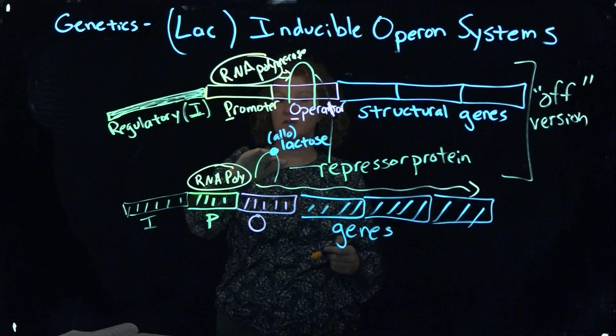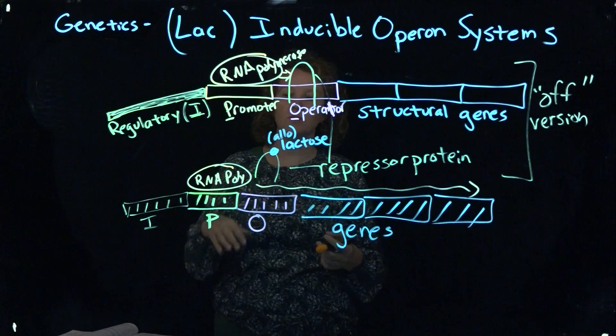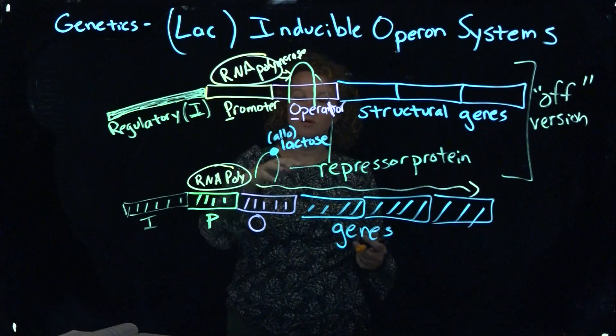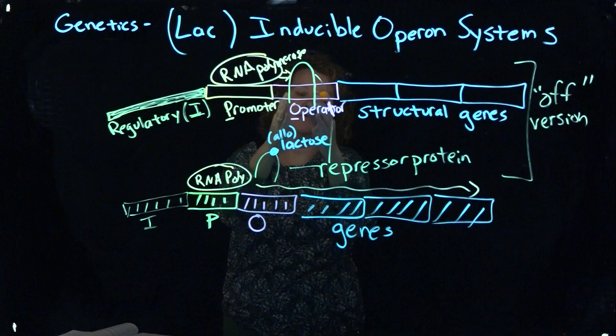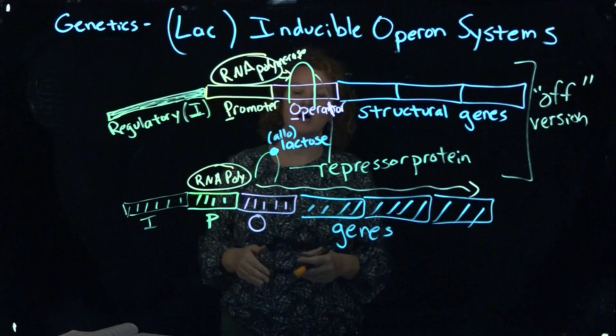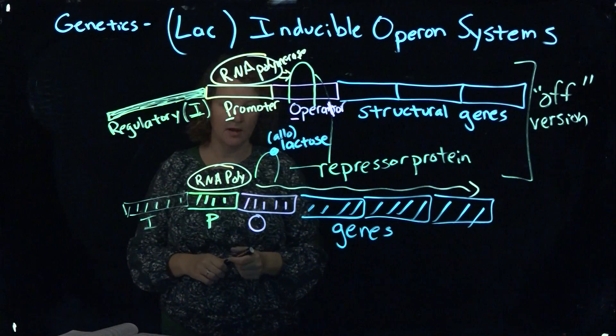And then when the concentration of lactose gets low, because the bacteria has broken down all the lactose that's available, the substrate will come off of the repressor and it will bend back into that repressor stage and it will bind back to the operator and shut the system back down.